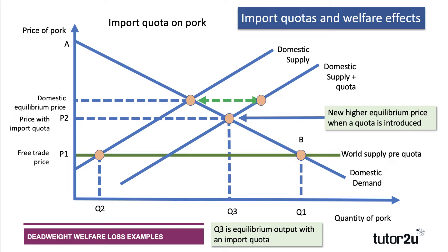At P2, output will be Q3, because at the higher price consumers are not willing or able to buy as much pork — there's been a fall in real incomes. At the higher price P2, domestic pork producers are better able to supply to the market; they're getting a good price, so there should be an expansion of supply from Q2 to Q4. With the quota, the gap between imports and domestic demand is shortened to Q4–Q3, which is the quota filled by the market.